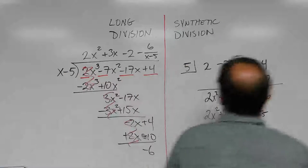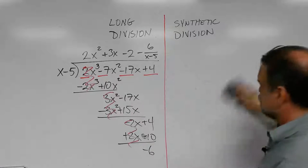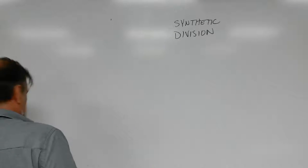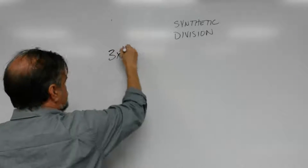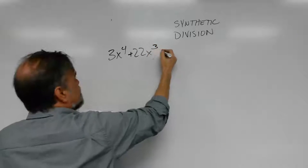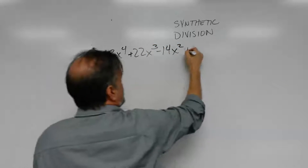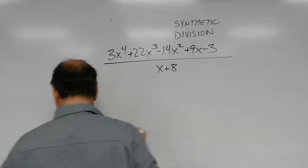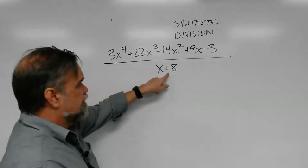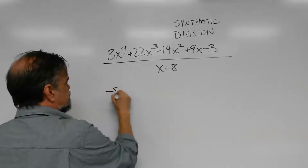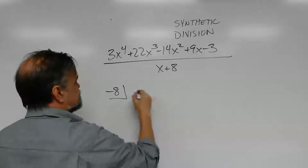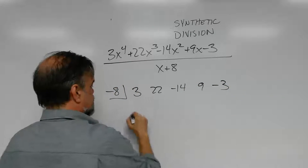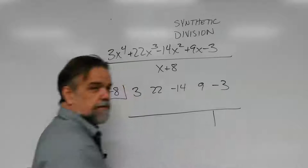Let's do another one. Let's do a long one. Let's do 3x to the fourth plus 22x cubed minus 14x squared plus 9x minus 3. It's going to be everything over x plus 8. All right. Well, we have x plus 8. Change the sign. Negative 8. Now, put just the coefficients. 3, 22, negative 14, 9, negative 3. Leave a little space, put a line. That's for my remainder. Now let's go.